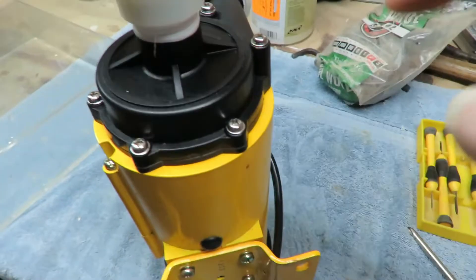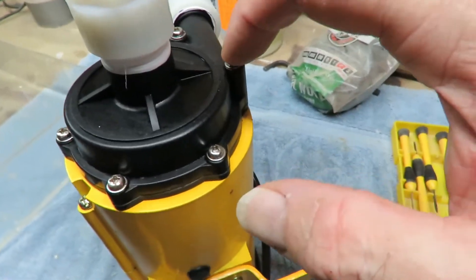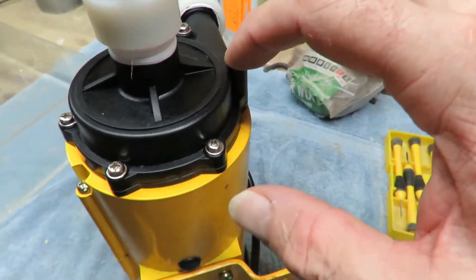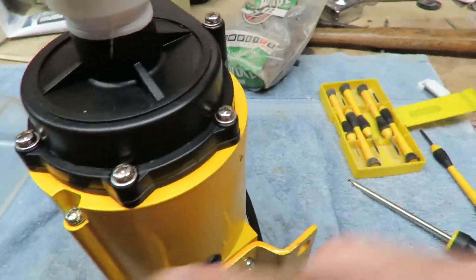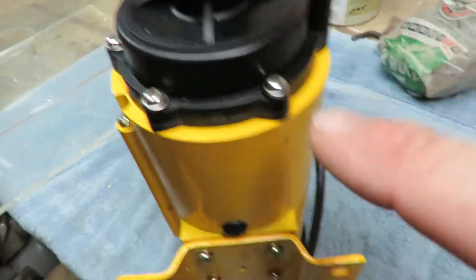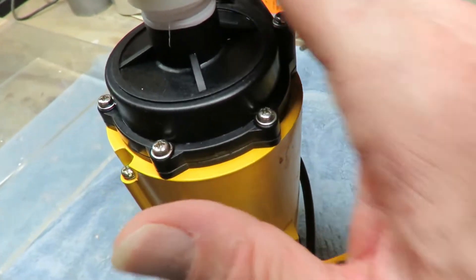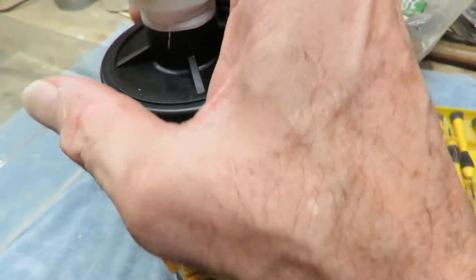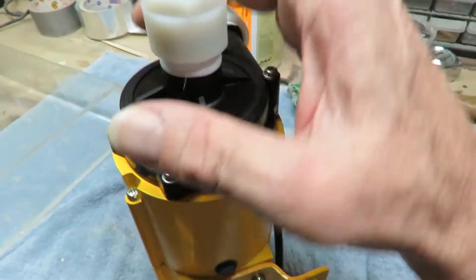Just get them threaded and started, then always do opposites. Take this one down till it just barely starts to snug, then do this one, then this one, and this one. That way you're going even all the way around and not crimping one side too much so it can leak. Once they're snug, go around and snug them up. Don't over-tighten—just get them nice and snug.